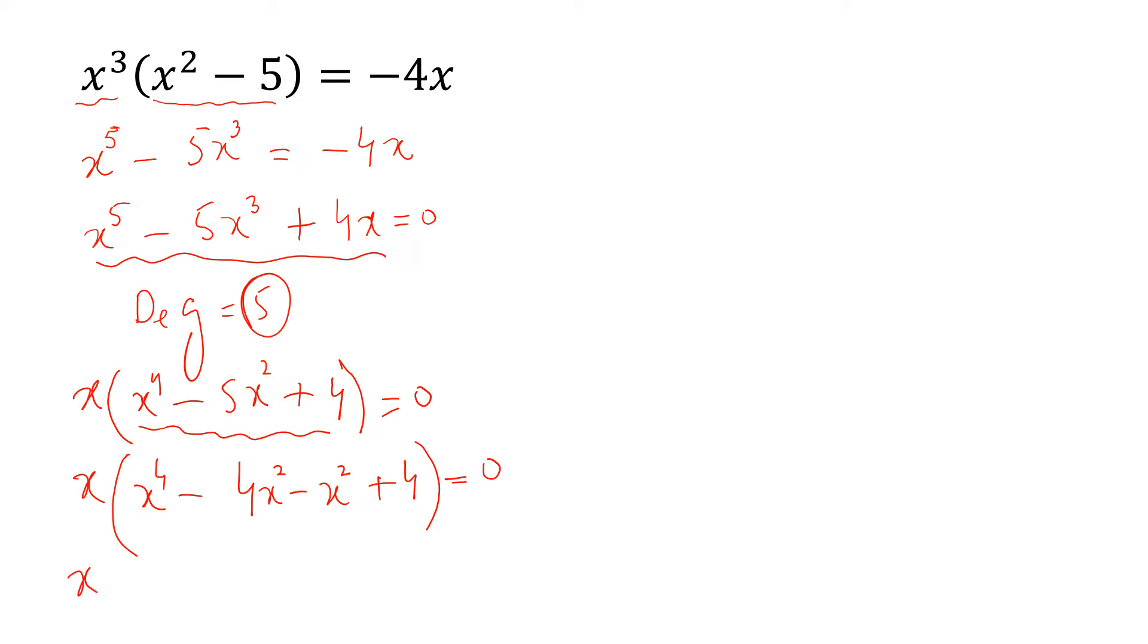Then, x into we take x square common from this. So, x square minus 4 and from here we take minus 1 common and this is x square minus 4 is equal to 0.